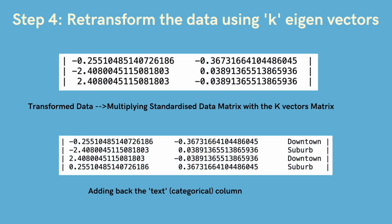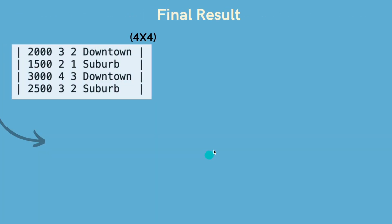Using these k eigenvectors we'll re-transform the data by multiplying the standardized data that we had created in the starting with these k vectors and then what we'll do in the end is re-transform the data and our final result will look something like this.